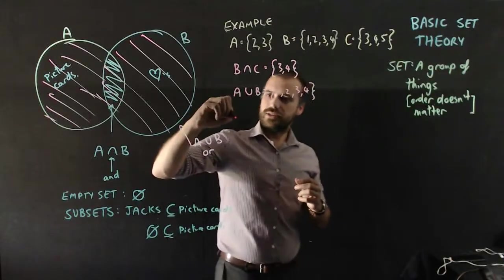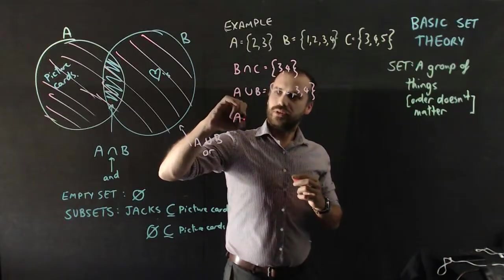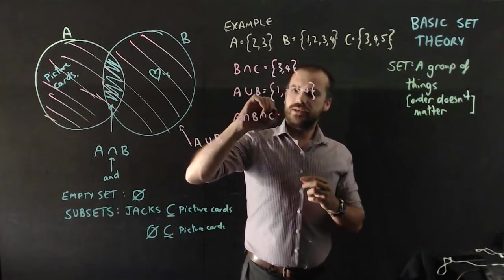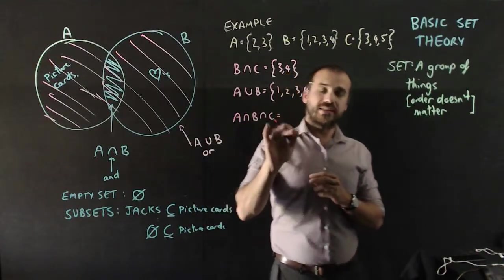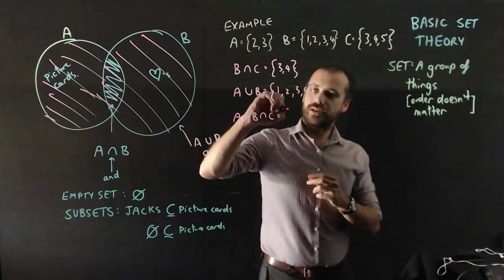We could say A intersection B intersection C. That just says something that is in B and in C and in A. So it looks like 2 and 3, 2 and 3. It looks like it's only 3 there.